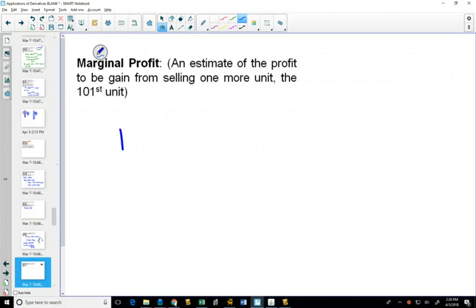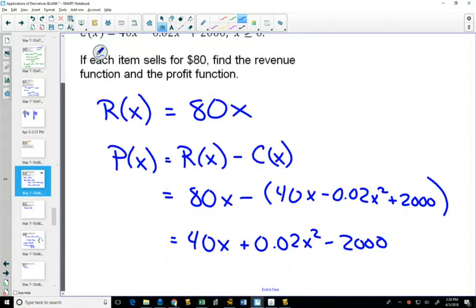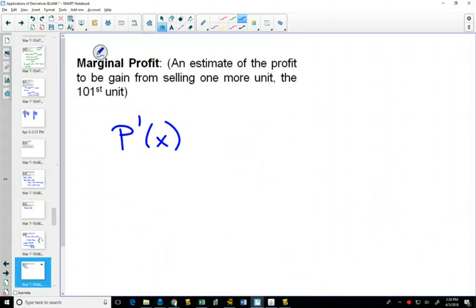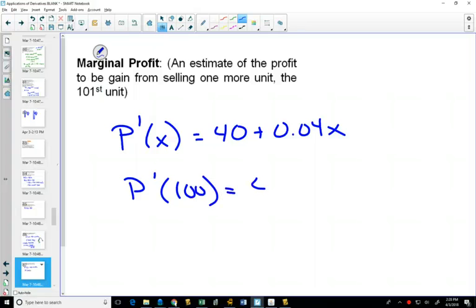And so here's our marginal profit. So if we take our profit equation, 40 + 0.02x, and so at 100, it's going to be $44.